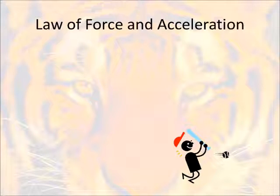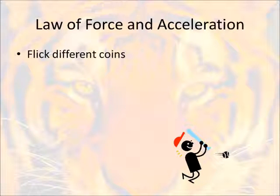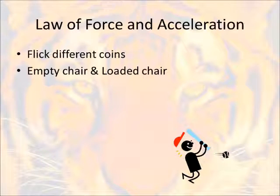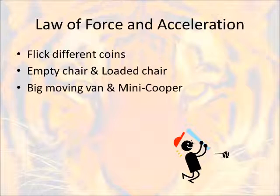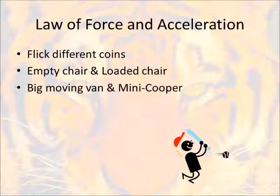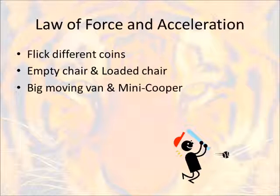Here are some examples of the law of force and acceleration. Flicking different coins: if you flick with the exact same force, you'll notice a different amount of acceleration — a small penny compared to a large quarter changes the mass, so the acceleration changes with the same force. An empty chair versus a loaded chair: push an empty chair and it accelerates easily; load it down with mass and using the same force, you won't see the same acceleration. A classic example is a big moving van versus a Mini Cooper — the moving van needs much more force to accelerate because it has much more mass.